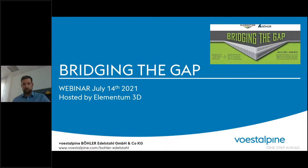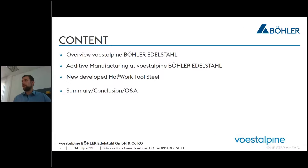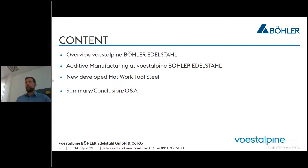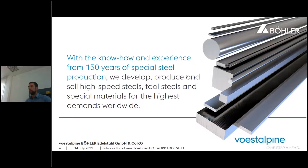Miloslav will give a brief introduction on our newest development — an easy-printable hot work tool steel. To introduce our company: Voestalpine Böhler Edelstahl already has 150 years of know-how and experience in the production of high-speed steels, tool steels, and special materials for the highest demands. We supply materials worldwide. Our product range is mainly bar materials from one millimeter diameter up to large mother blocks of 1,200 mm by 800 mm.